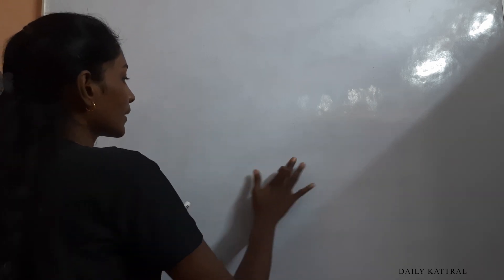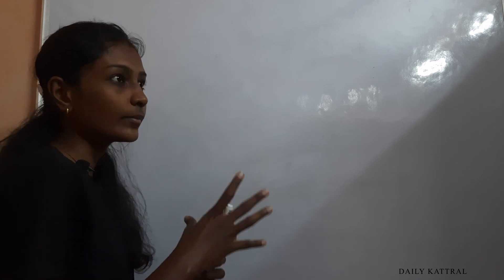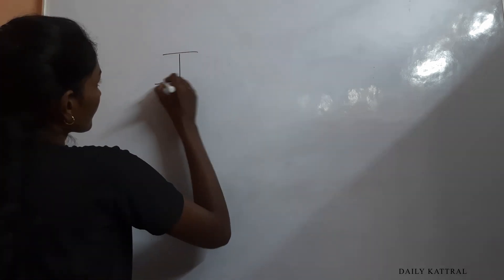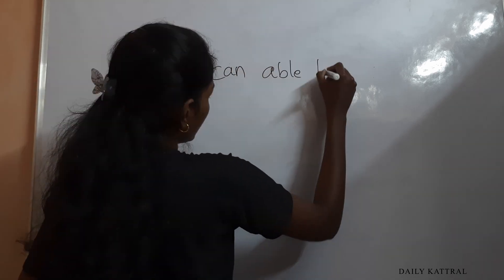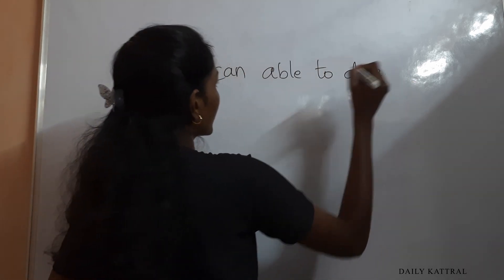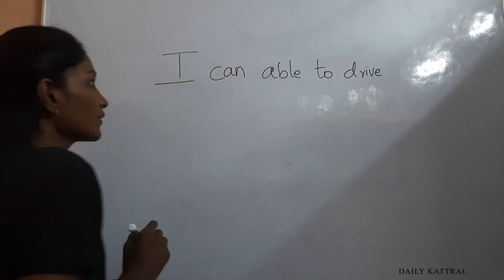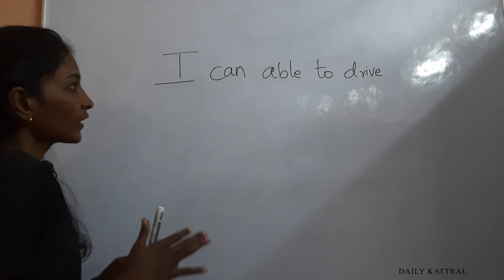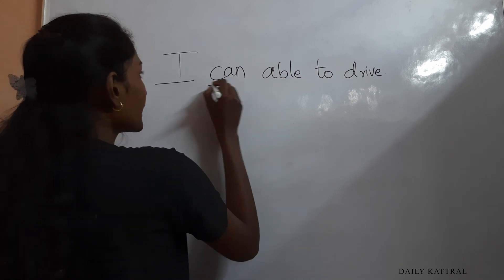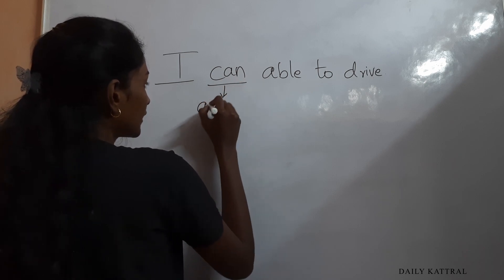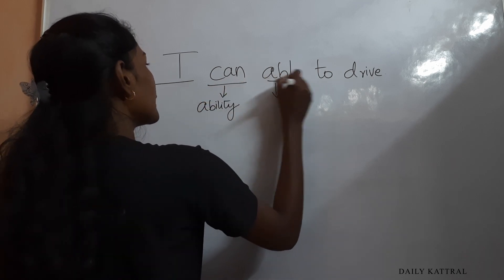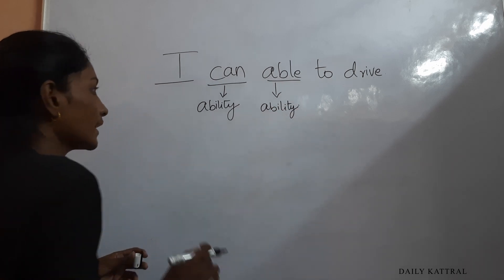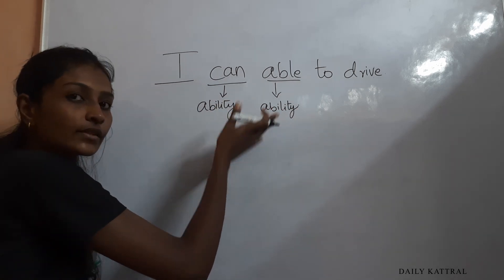Can and able are the same in meaning. For example, 'I can able to drive' — this sentence is not correct. Why? Because 'can' and 'able' both express ability. 'Able' is the ability. So you cannot use both together in one sentence.